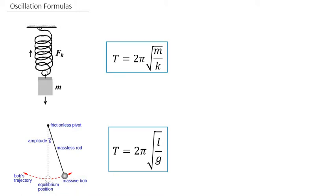Let's start with the mass on the spring. We have that the period of this oscillation is going to be equal to 2π times the square root of the mass divided by the spring constant.